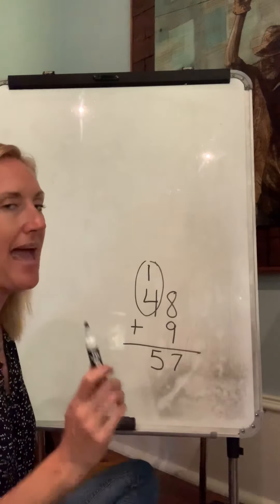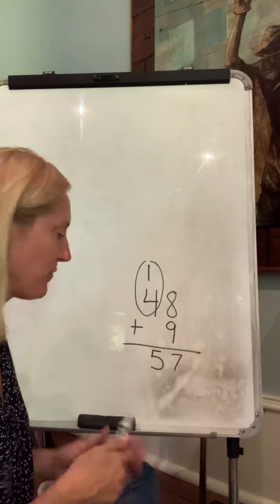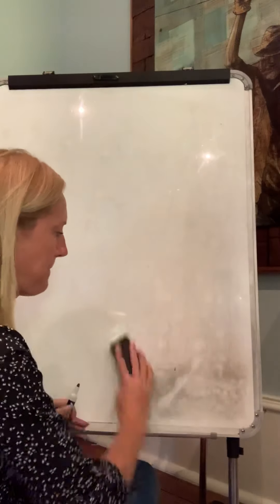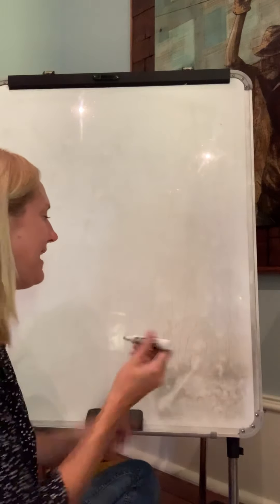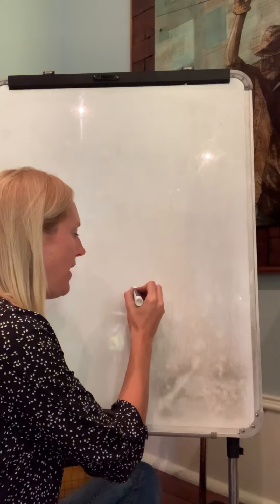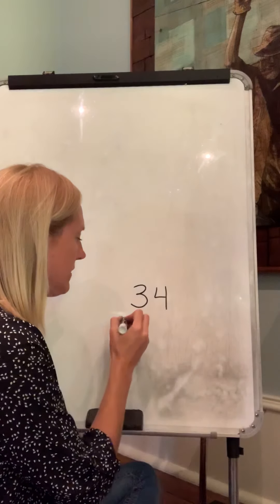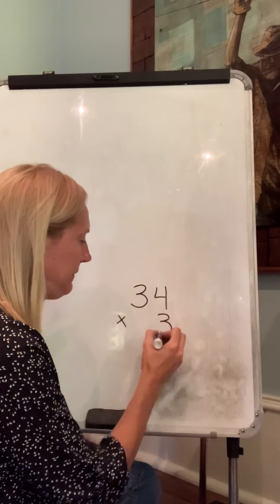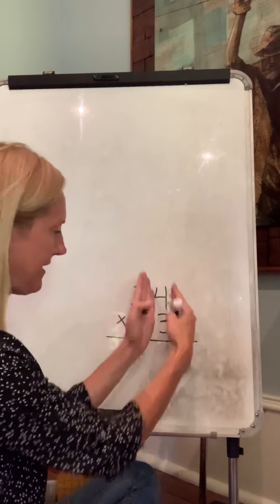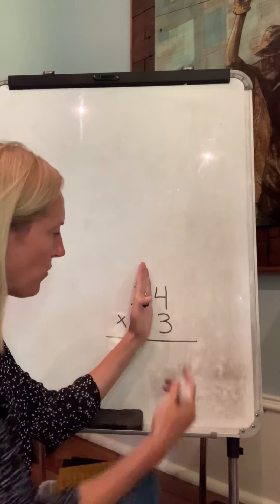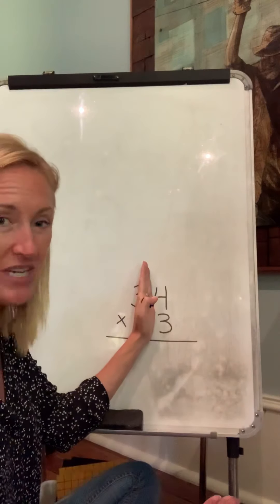The same thing happens in multiplication. Let's say I have thirty-four times three. Again, I put the ones under the ones. We're going to start with four times three. Four times three is twelve.